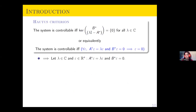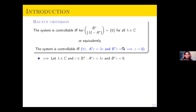We have another controllability criterion called the Hautus criterion, which states that the system is exactly controllable if and only if the kernel of the matrix [lambda I - A^*, B^*] is equal to zero for any lambda complex. Equivalently, for any lambda and any eigenvector epsilon of A^* associated to lambda, if B^* epsilon equals zero then necessarily epsilon equals zero.